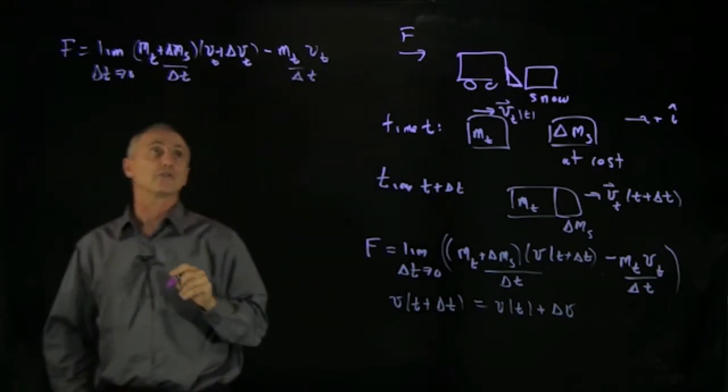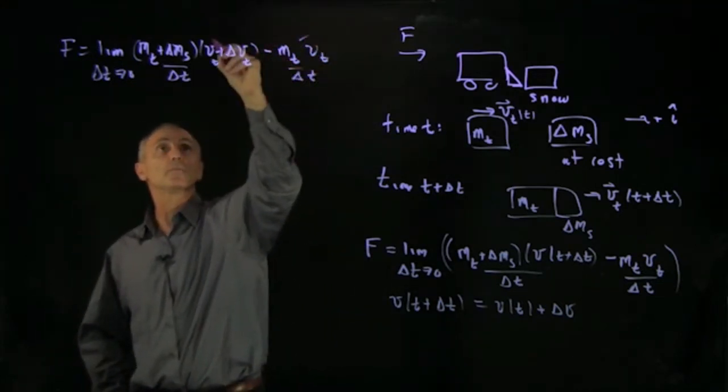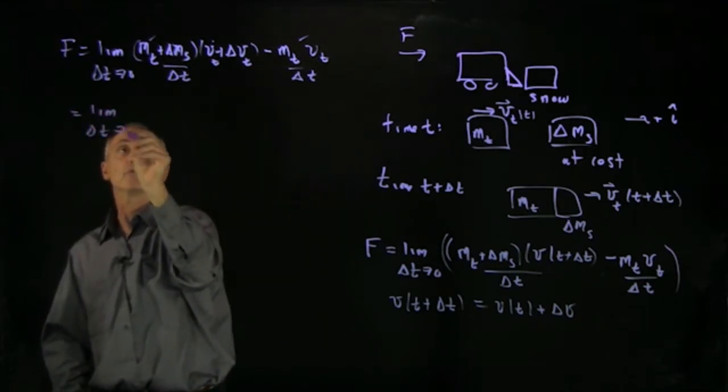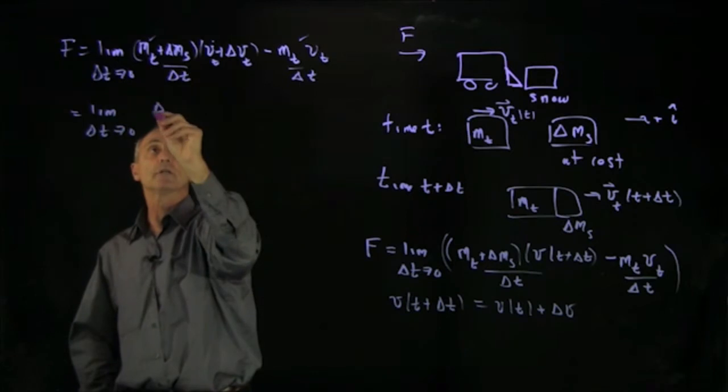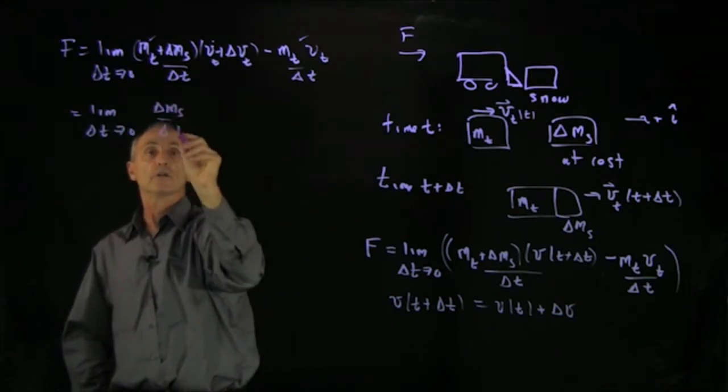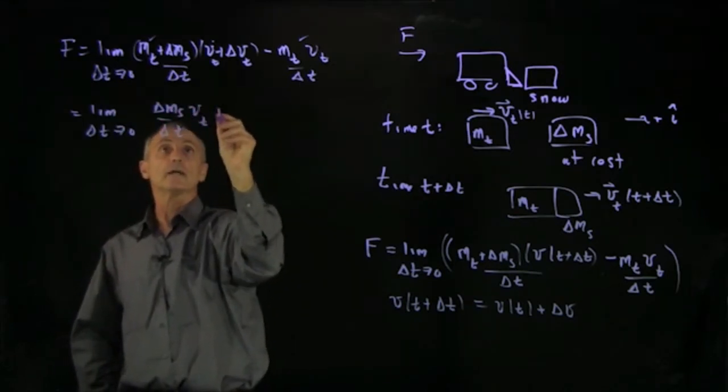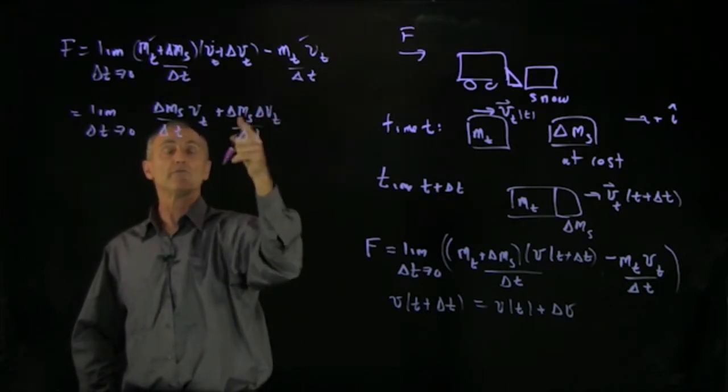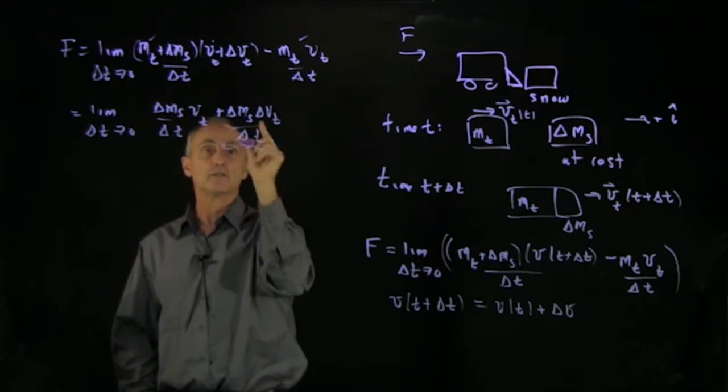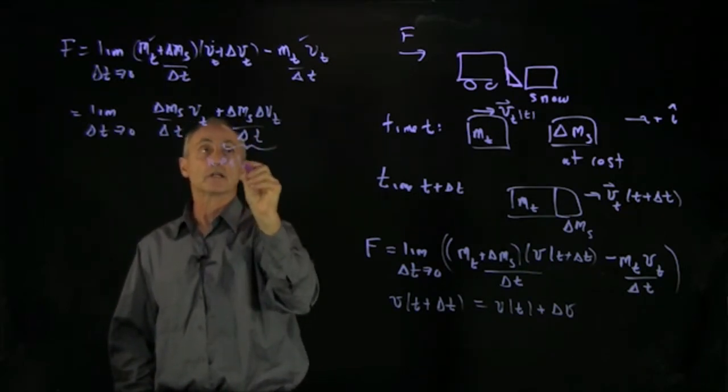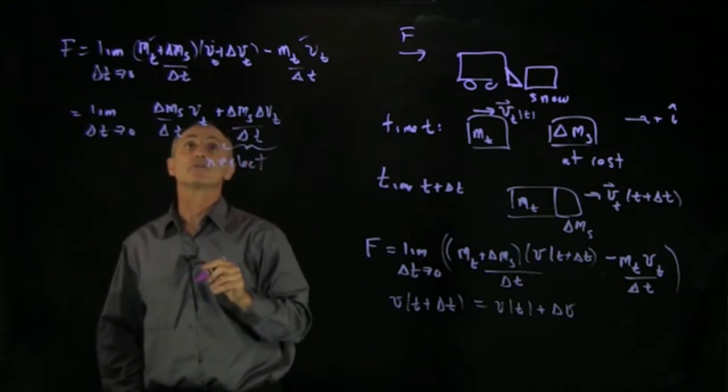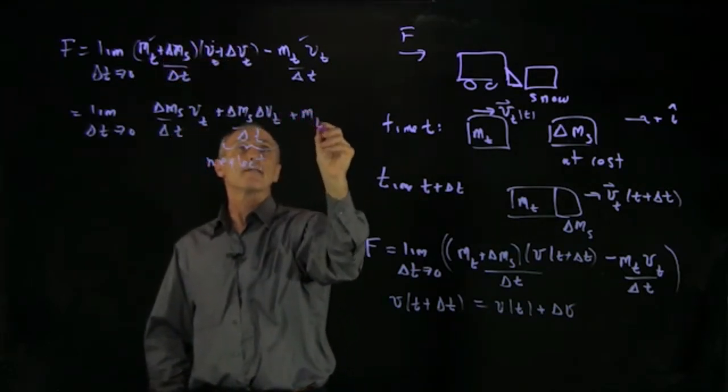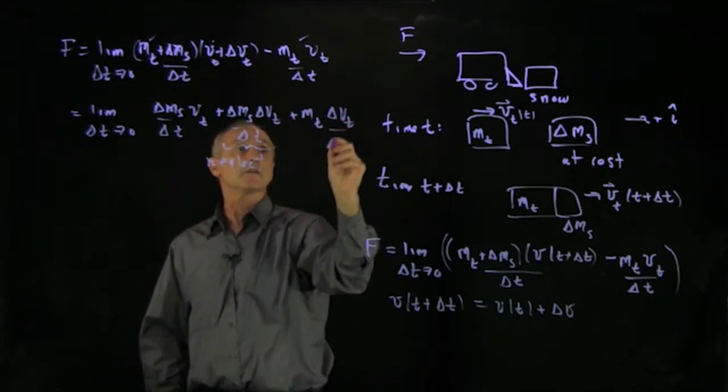Well, first off, we see some cancellations between this term and that. And what we're left with is limit as delta t goes to 0. We have this snow term, delta ms over delta t times v truck. Now, here we have a term which we're going to analyze in a moment. It has two infinitesimal quantities. And this term is of second order, which we're going to neglect. And finally, we have the term of mass of the truck times delta vt delta t.